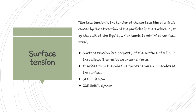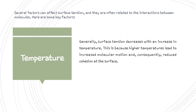Now coming to the actual point — factors that affect surface tension. The first factor is temperature. Surface tension generally decreases with an increase in temperature. This is because higher temperature leads to increased molecular motion and consequently reduces cohesion at the surface. Consider when you have kept water for boiling — you will notice that bubbles start forming at the bottom before boiling. This is because at higher temperature, water molecules gain energy and move more freely, reducing surface tension.